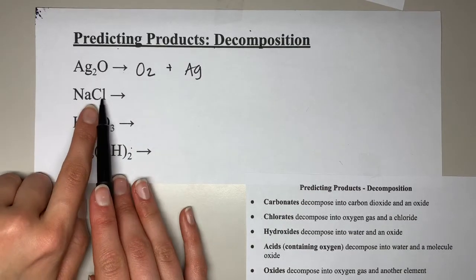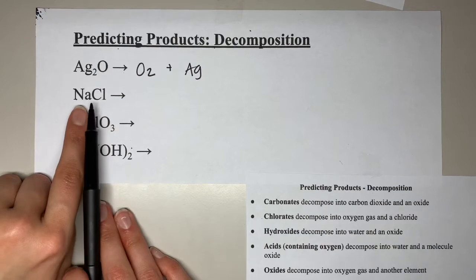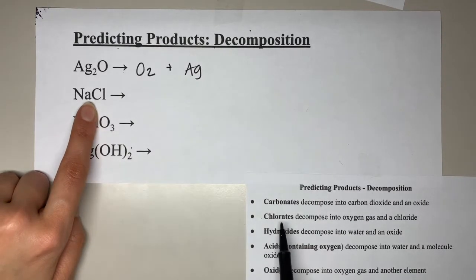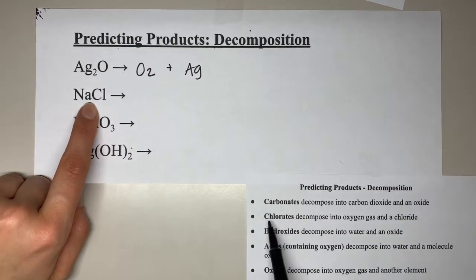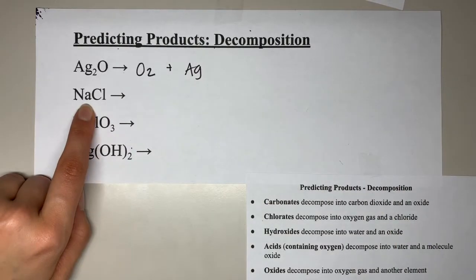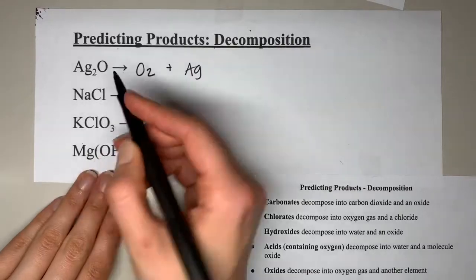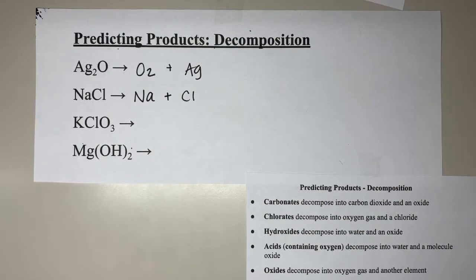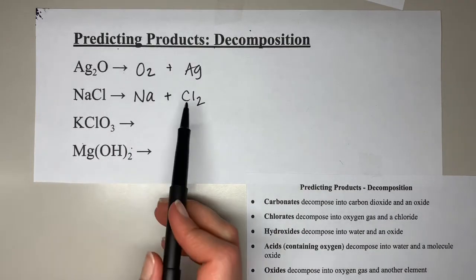Next we have NaCl, sodium chloride, and it is not located on this list. Be careful though — chloride and chlorate are different. Chlorate is on this list; chloride is not the same. We are not using the chlorate rules to break down sodium chloride. When you have something that's not on this sheet, you just break it into its parts: sodium by itself, and chlorine by itself. Chlorine is a diatomic element, so it appears as Cl₂.